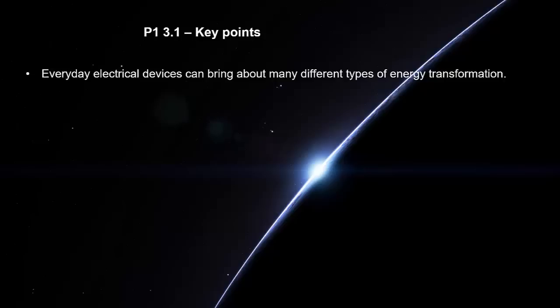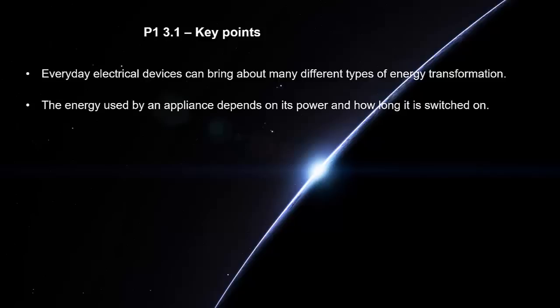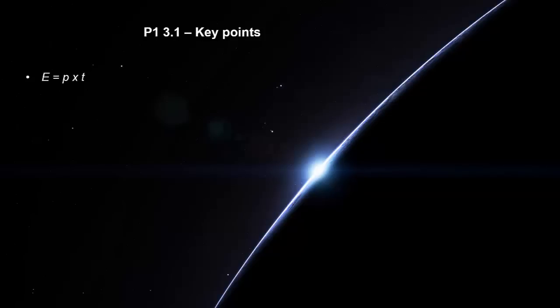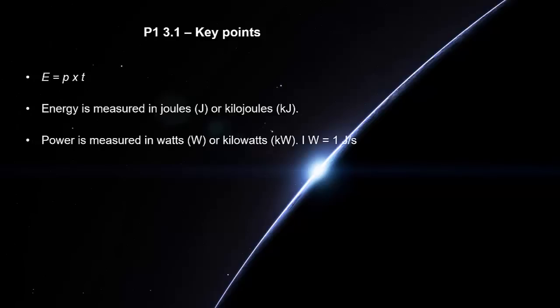Everyday electrical devices can bring about many different types of energy transformation. The energy used by an appliance depends on its power and how long it is switched on. The power of an appliance is the rate at which it transforms energy. E equals P times T. Energy is measured in joules or kilojoules. Power is measured in watts or kilowatts. One watt equals one joule per second. Time is measured in seconds or hours.